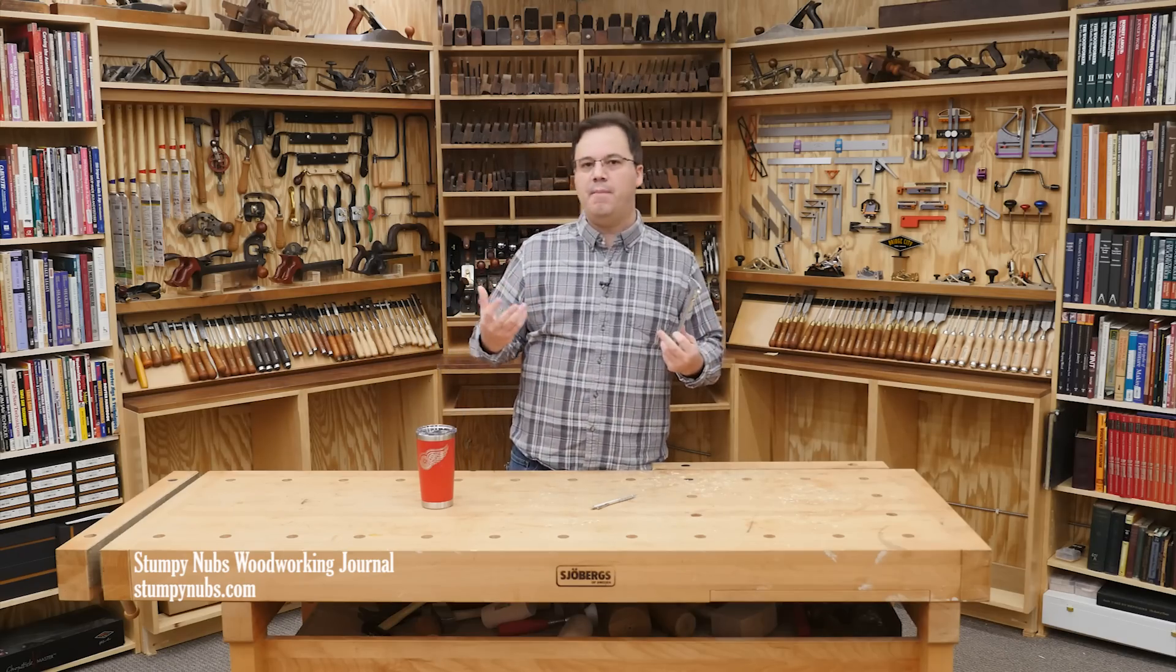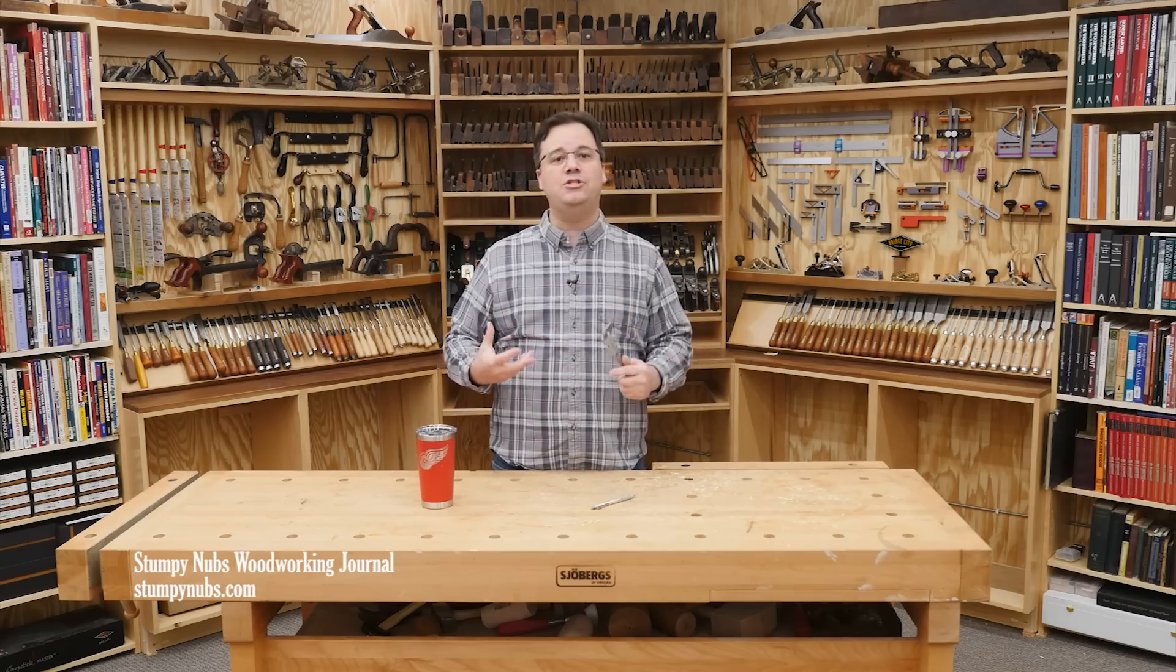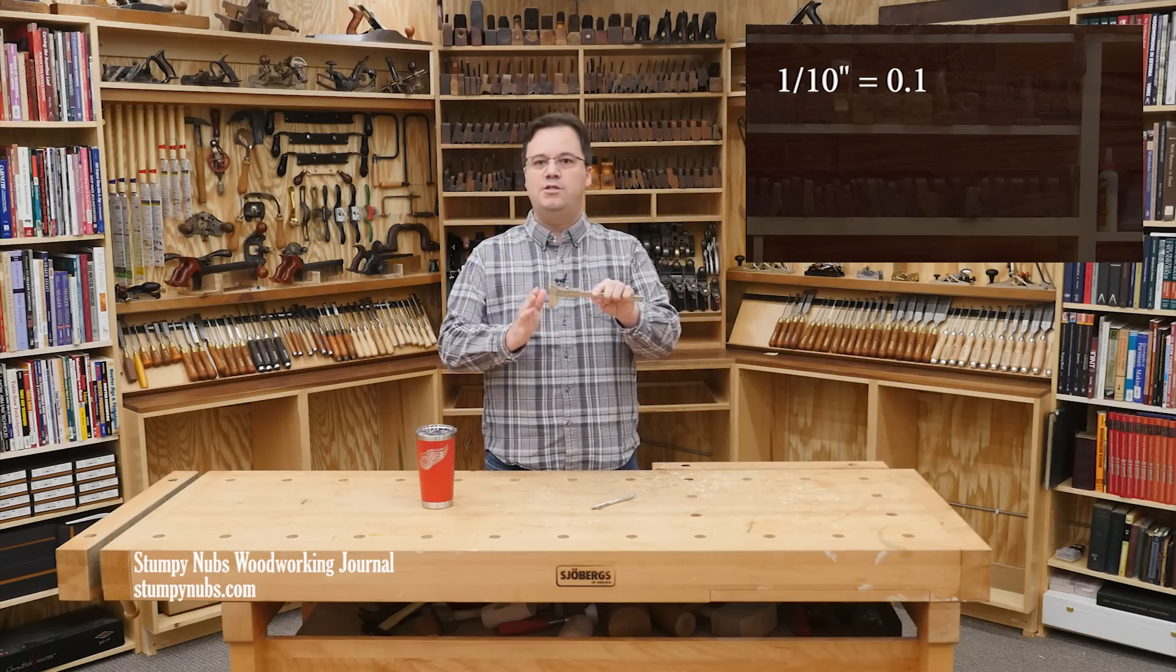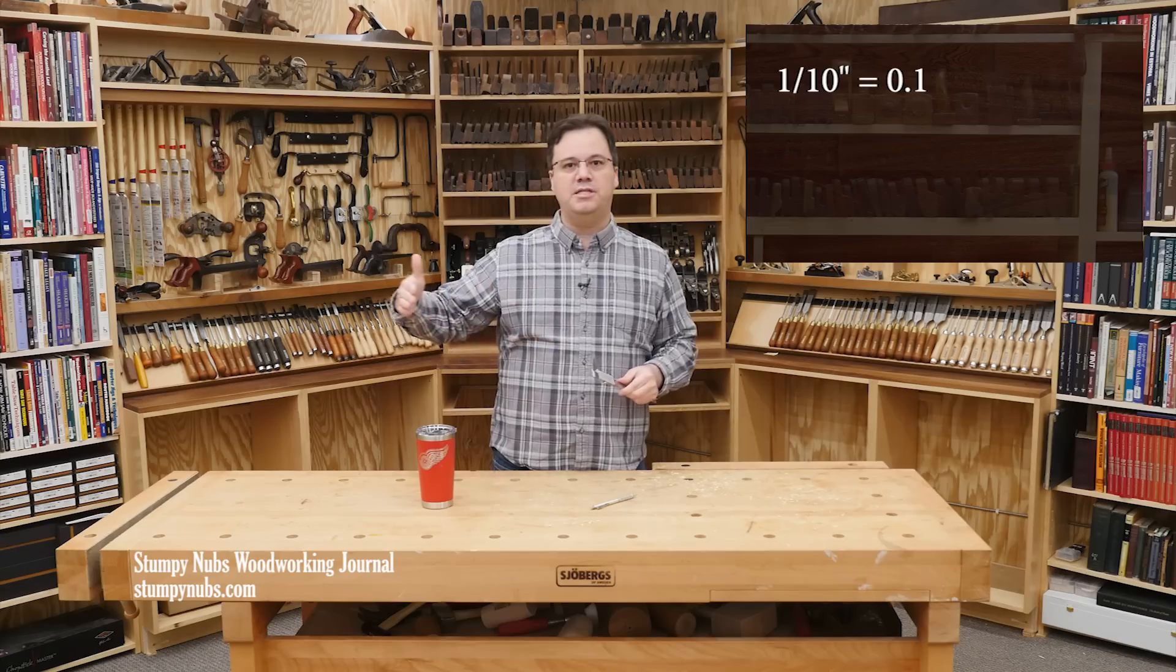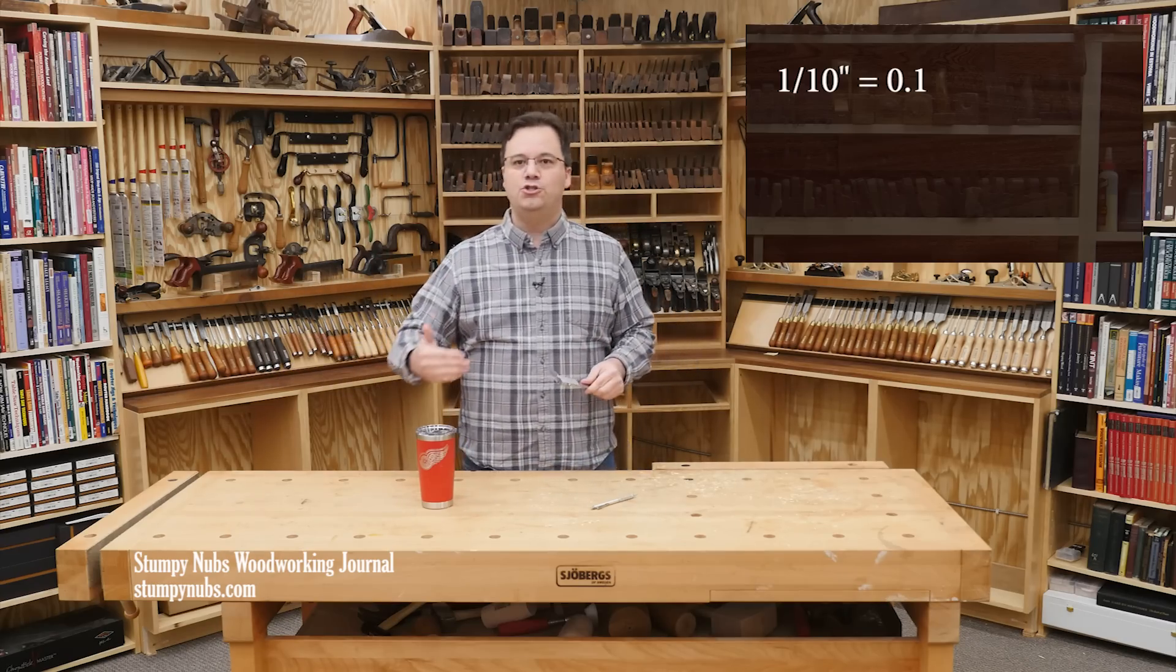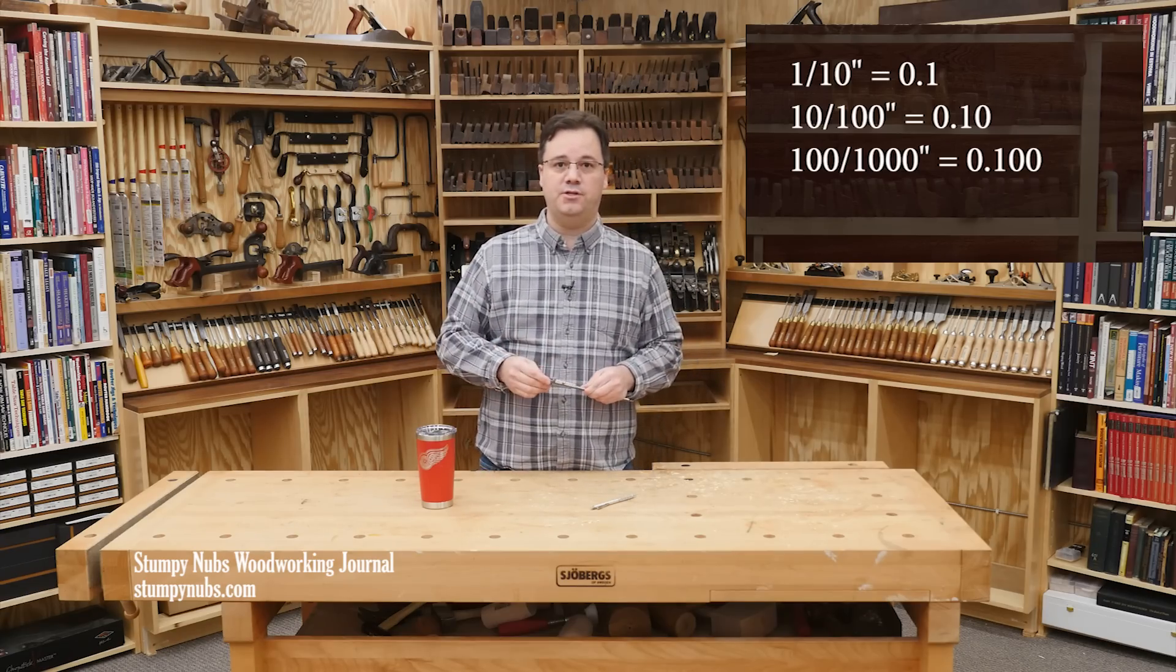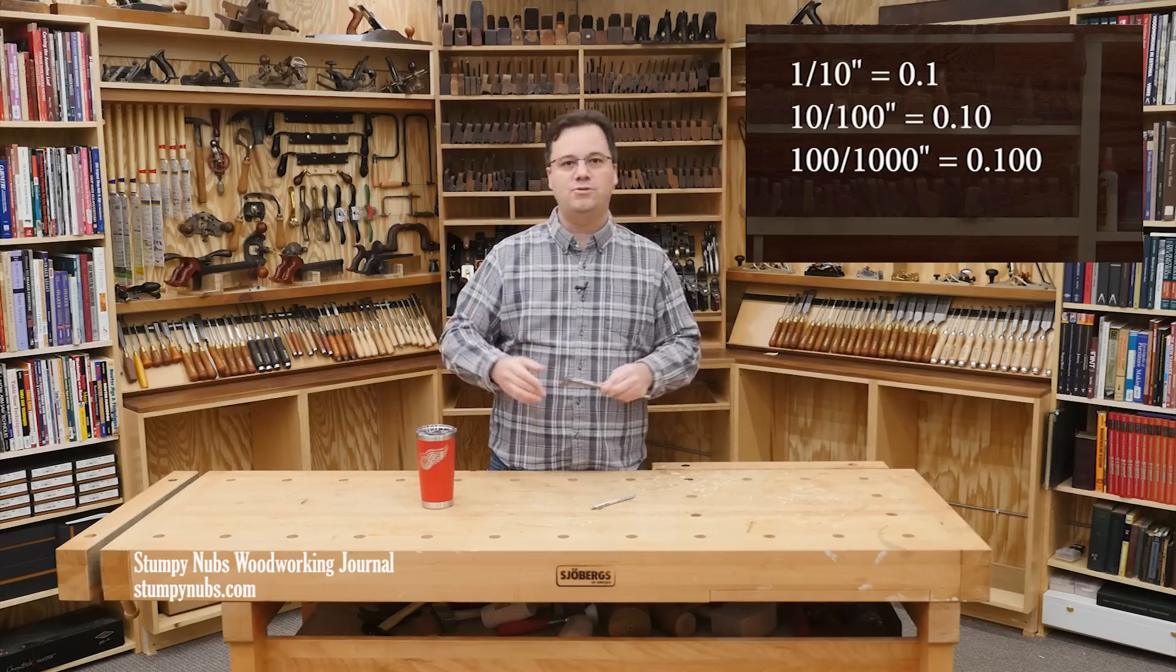Now to wrap your head around that math, try to think of things in terms of decimals, because decimals are easier to add and subtract and divide than fractions are. The decimal equivalent of one-tenth of an inch is point one. Now a handy thing about working with decimals is you can add as many zeros to the end of a number as you want to convert it into a smaller increment. So point one, or one-tenth of an inch, is the same as point one-zero, or ten one-hundredths of an inch, which is the same as point one-zero-zero, or one-hundred one-thousandths of an inch.